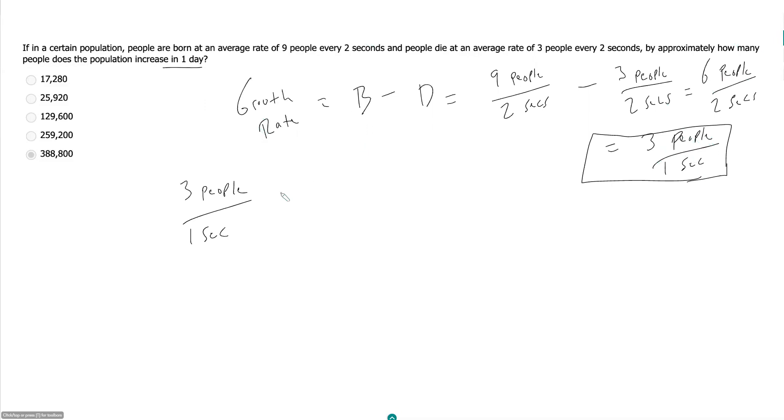So we got three people every one second to start. If I want to convert this into days, I know that there are 3,600 seconds in an hour, because there are 60 seconds in a minute and 60 minutes in an hour. So 60 times 60 is 3,600 seconds per hour. This should give me my growth rate per hour, but I want it per day, so then I also need to say that I have 24 hours in one day. Now my hours will cancel and I'm just left with people per day.